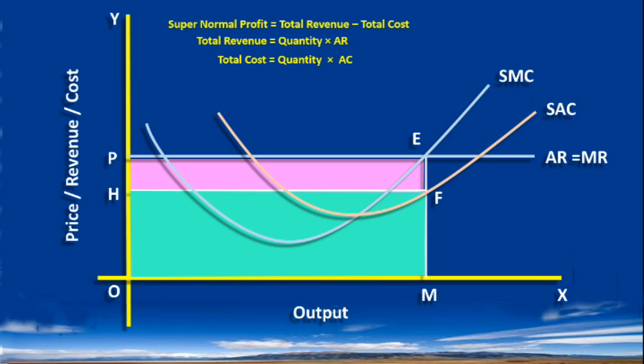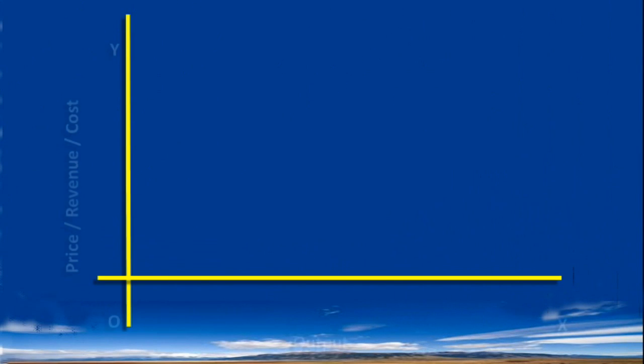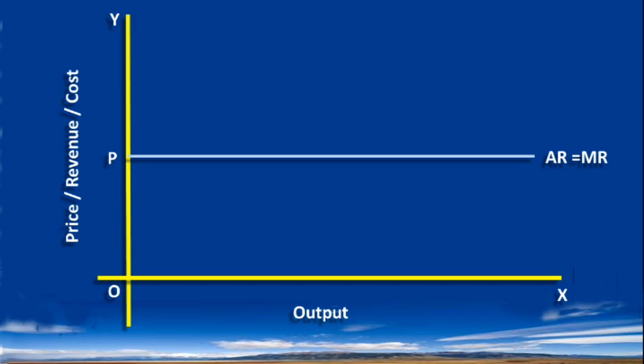Well, we shall now turn our attention to how to draw the graph. Draw the two axes and label them properly. Fix the price as P and draw the average revenue curve and name it as AR is equal to MR.